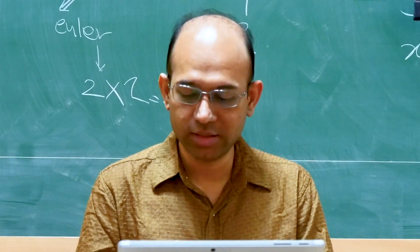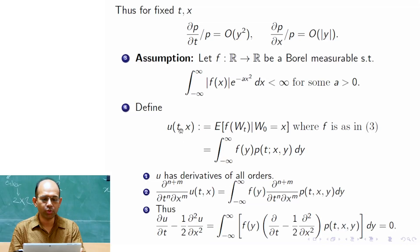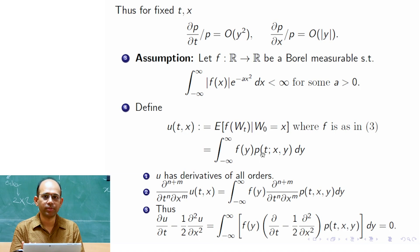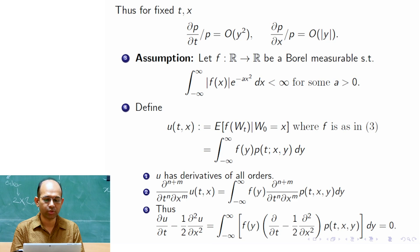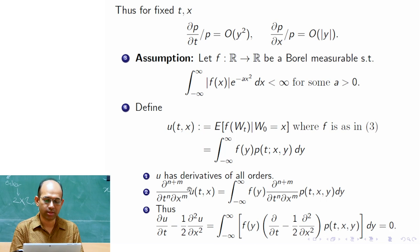In the last lecture, we saw that the function u given as the integral from minus infinity of f(y) p(t,x,y) dy, where p is the heat kernel — the probability density function of a normal random variable with mean x and variance t — satisfies the heat equation: ∂u/∂t − (1/2)∂²u/∂x² = 0. This result was proved in the last lecture.